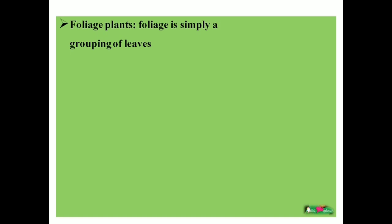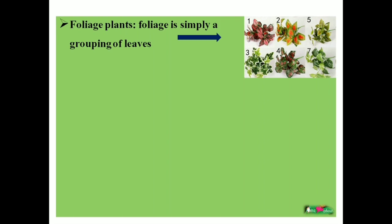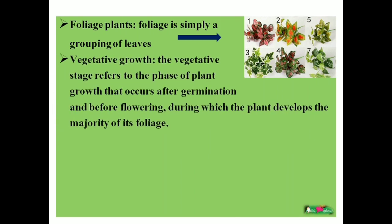Foliage plants are actually the leafy parts of plants. Sometimes we use that word for leaves, either individual or collective. Some foliage or leaves of ornamental plants look more beautiful than flowering plants. Then vegetative growth — this refers to new leaves emerging after germination or after a propagation method, meaning simply the stage after germination or propagation and before flowering.